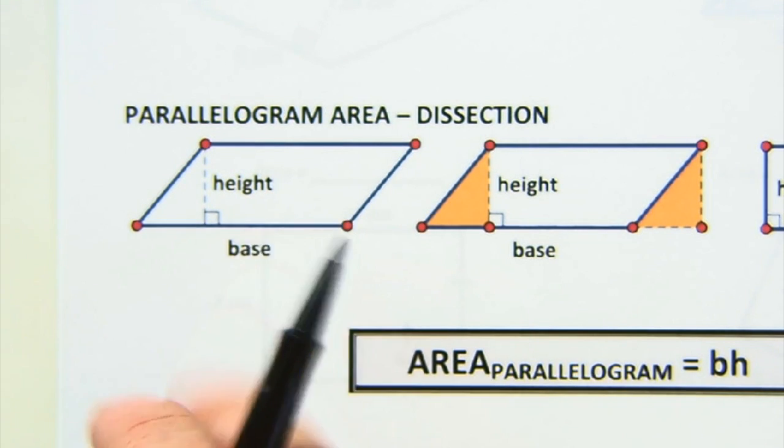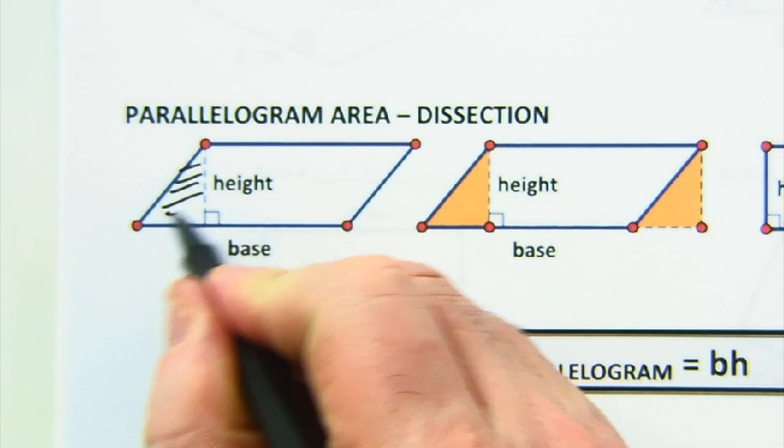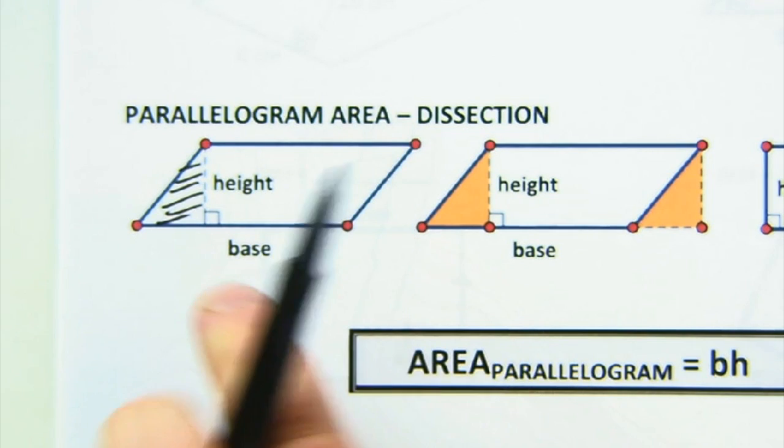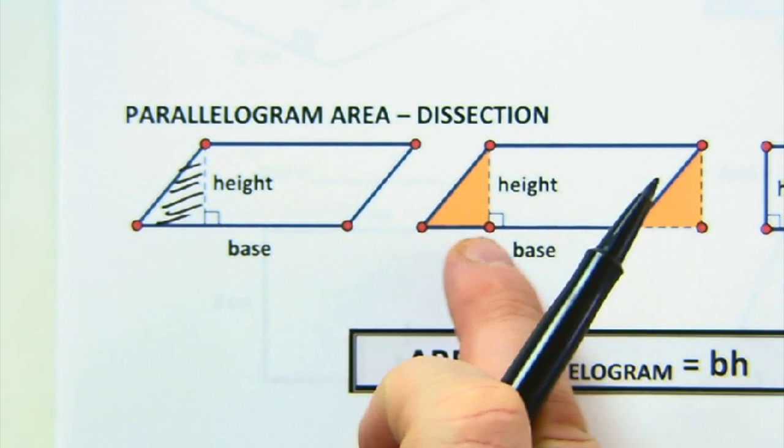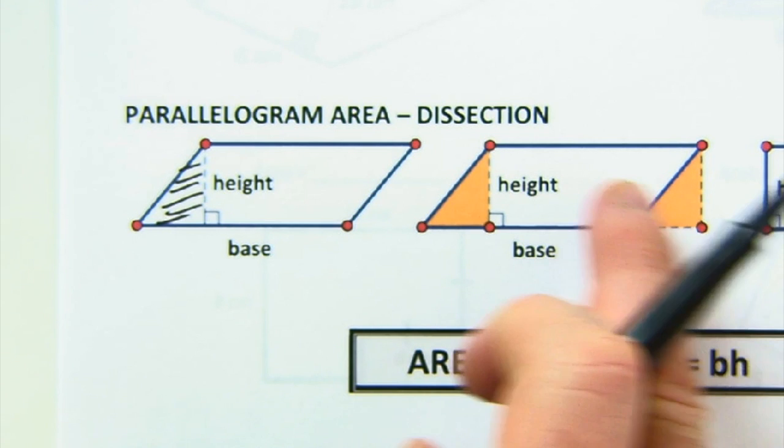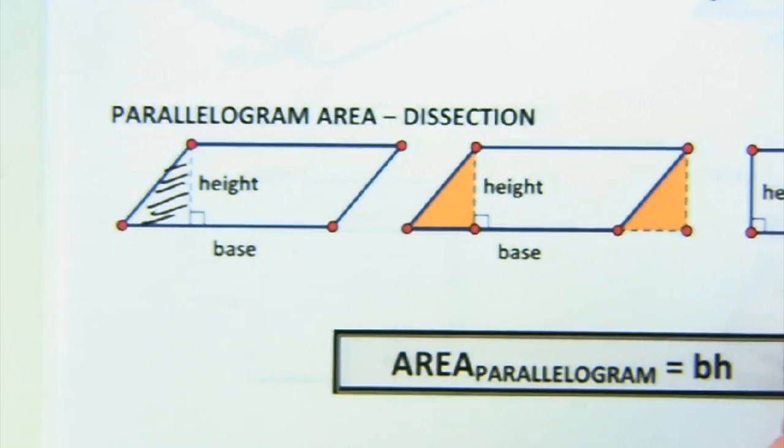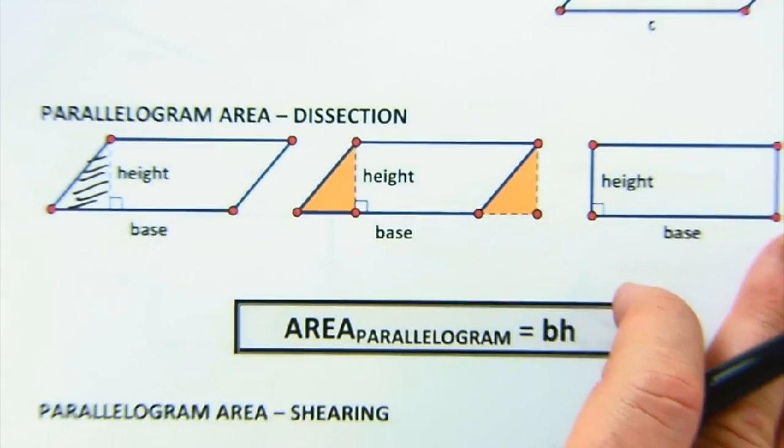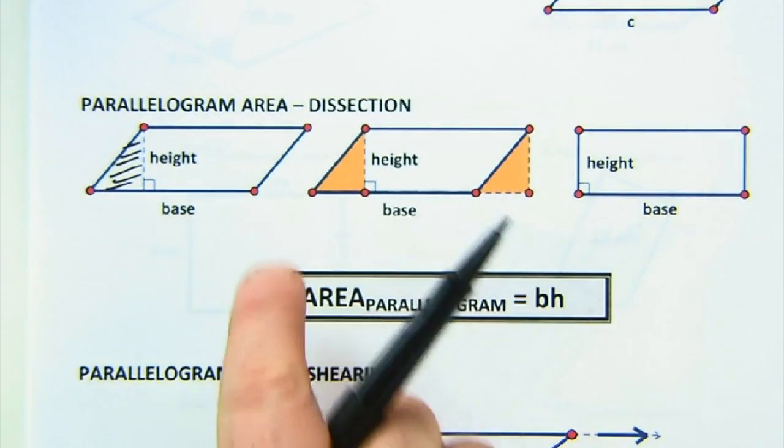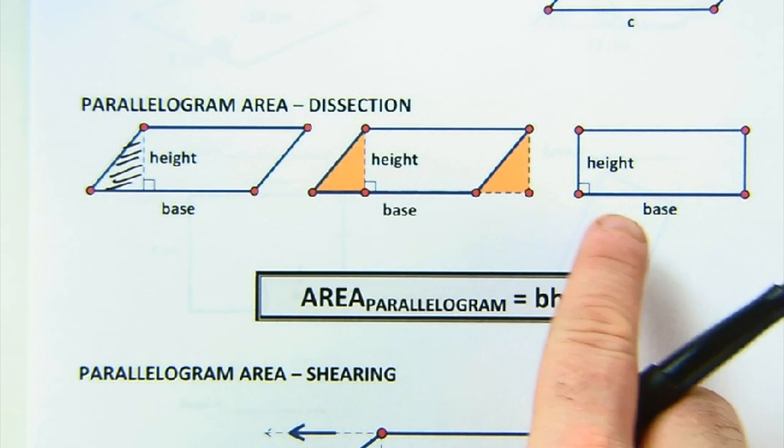If we take our parallelogram and we dissect it, this is a way to come up with area. We take this piece and kind of cut it away, and we translate it. It will automatically fit here. It'll fit there because we know opposite sides are parallel and equal and so on. And you can see that by doing this, we basically, by dissecting this piece and placing it in the new location, we form a rectangle.